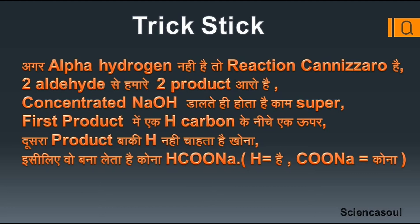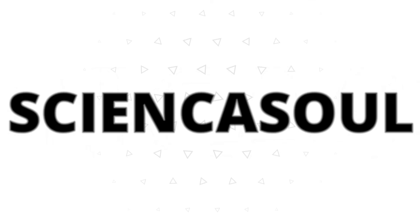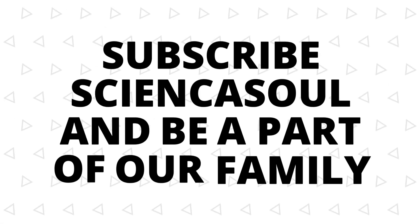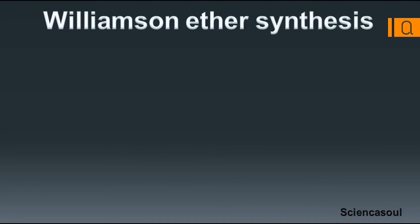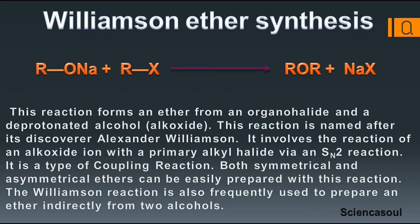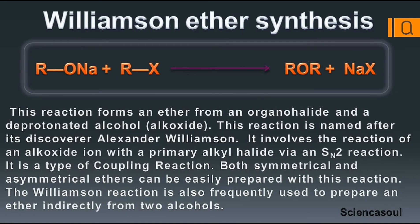Williamson Ether Synthesis involves an ether from an organohalide and a deprotonated alcohol. This reaction is named after its discoverer Alexander Williamson. It involves the reaction of an alkoxide ion with a primary alkyl halide via an SN2 mechanism. It is a type of coupling reaction. Both symmetrical and asymmetrical ethers can be easily prepared with this reaction.